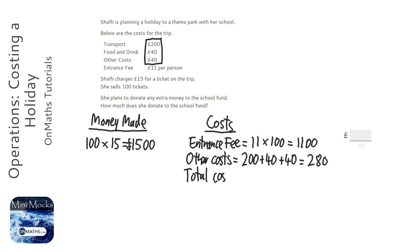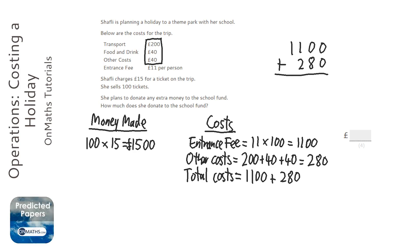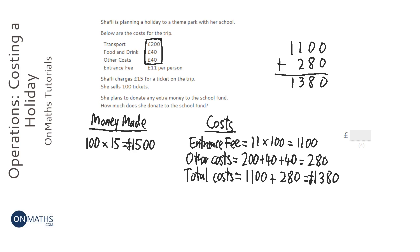We work out the total costs by doing 1100 plus 280 — you can do any of these using any method you feel comfortable with. So the total costs are 1380 and she's made 1500 pounds. She's donating all the extra money to the school fund.